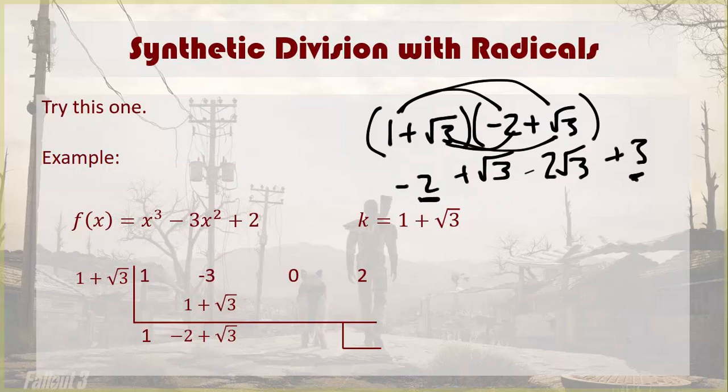You've got negative 2 and 3. It's going to give you 1. You've got 2 square roots of 3 that are negative and 1 that's positive. It's going to give you minus the square root of 3.